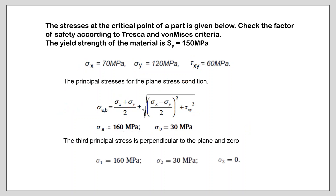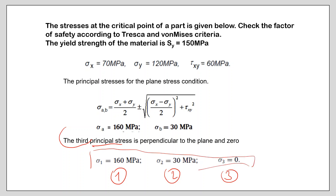Considering also the third stress, the largest principal stress is sigma 1 equals 160 MPa, the smallest is sigma 3 equals zero, and sigma 2 equals 30 MPa. These are now the ordered principal stresses, and we can now apply the failure criteria.